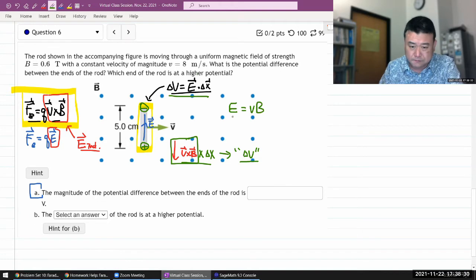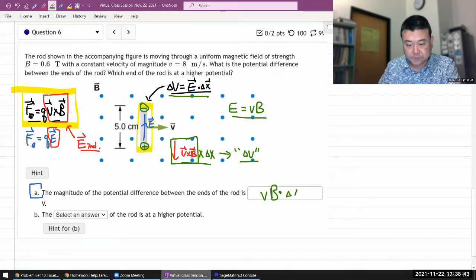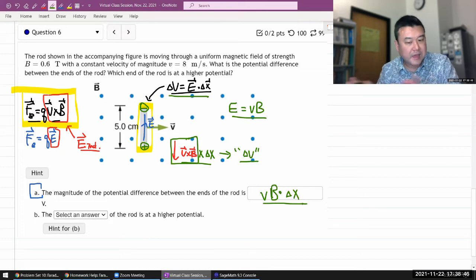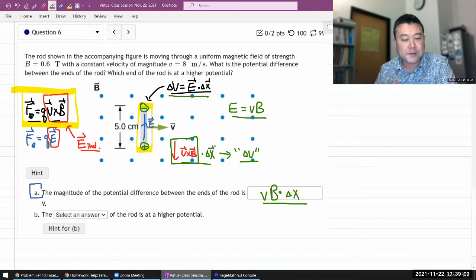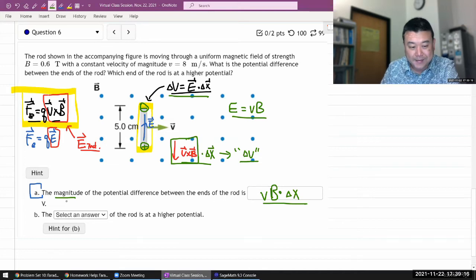So in terms of magnitude, your answer doesn't change. So the answer here is simply going to be VB times this difference here, delta x. And the angles are all 90 degrees. So the cross product will give you just the product of magnitudes and the dot product will give you the product of magnitudes again. So in terms of the magnitude, it doesn't matter.